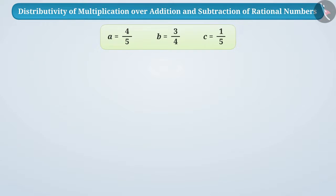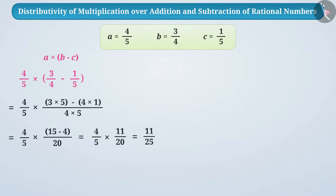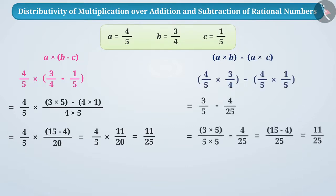Now you can find the result by placing the values taken in the place of a, b, c in a multiplied by b minus a multiplied by c. Did you get the same result in both cases? What does this tell you?